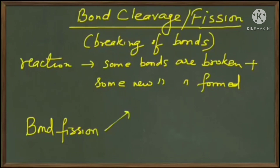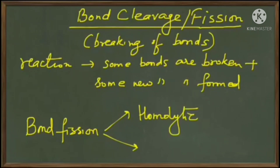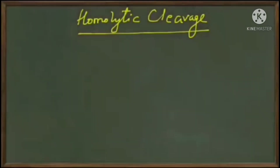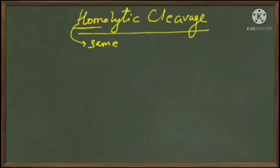The first type is homolytic cleavage and the second one is heterolytic cleavage. We will take a look at them one by one. Let's talk about homolytic cleavage. Homo means same, so in this type of bond cleavage the species will get an equal amount of electrons.